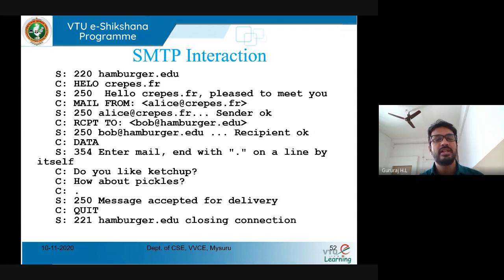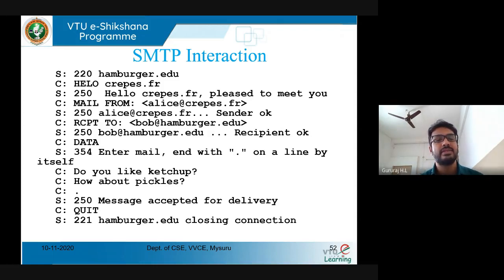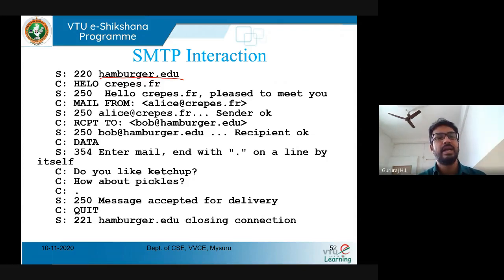The interaction will always start with the server itself. From the beginning of this module we studied the important architectures of networks: one is client-server and one is peer-to-peer. With respect to client-server architecture, the server should always be ready — the client can send a request whenever it wants and will get a reply, but the server must always be ready. Here we are targeting hamburger.edu, and with status code 220 the server should be ready.